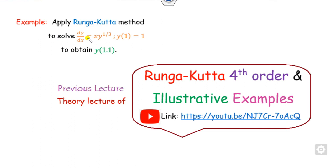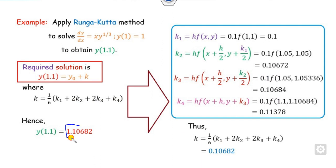In this lecture, we will construct the MATLAB code for this problem so that it can match your result from the theory lecture, which is available in the description. The final answer of the problem is already known. We will find the values of k1, k2, k3, k4, then find k, and hence obtain the result.